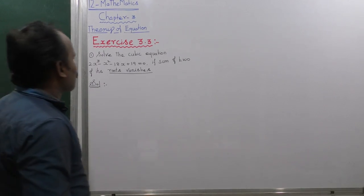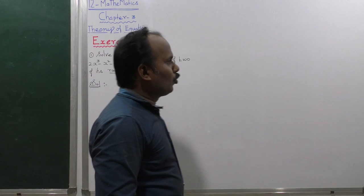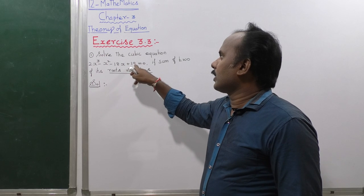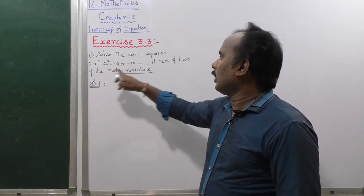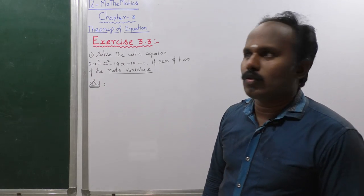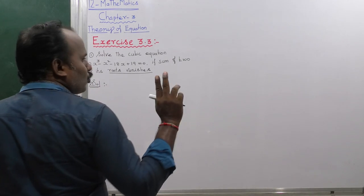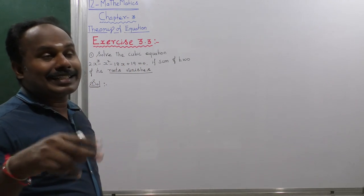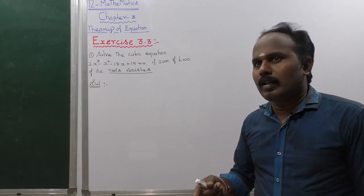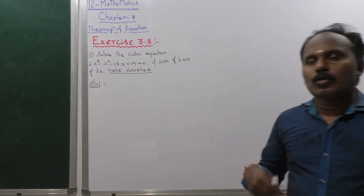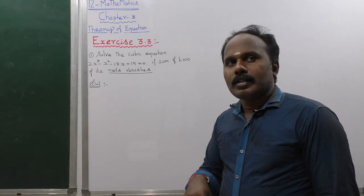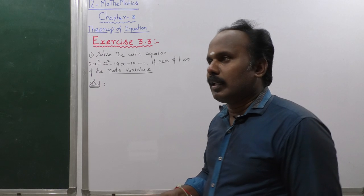Exercise 3.3: Solve the cubic equation 2x³ - x² - 18x + 19 = 0, given that the sum of two of its roots vanishes. Vanishes means the sum of two roots is equal to zero. So let one root be alpha and another be minus alpha, and one root be beta — that is called the vanishes condition.